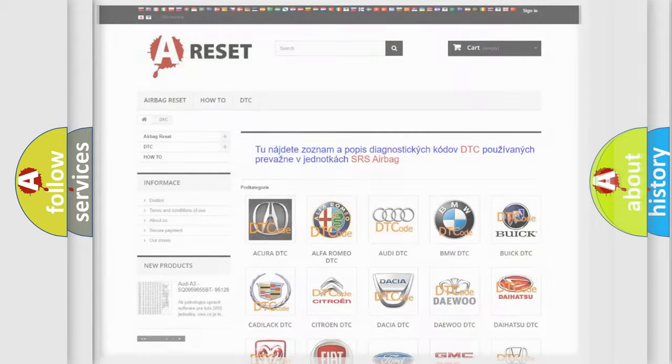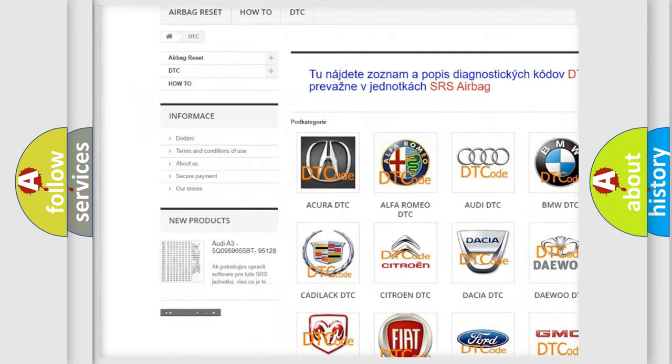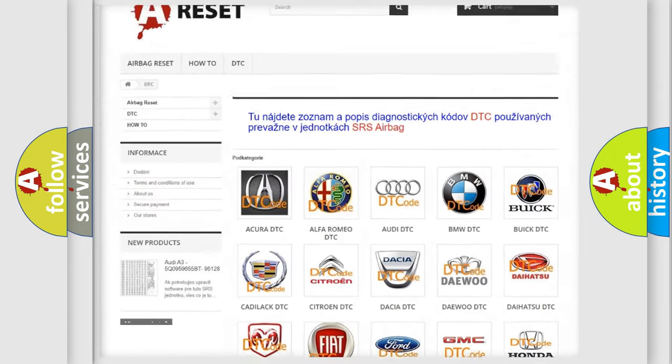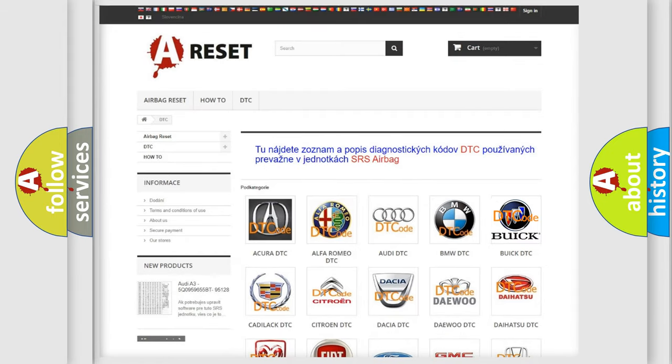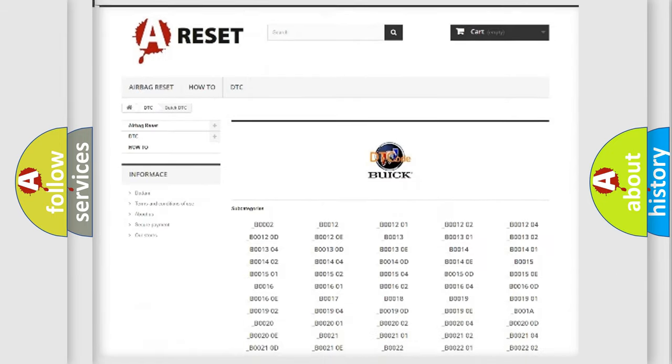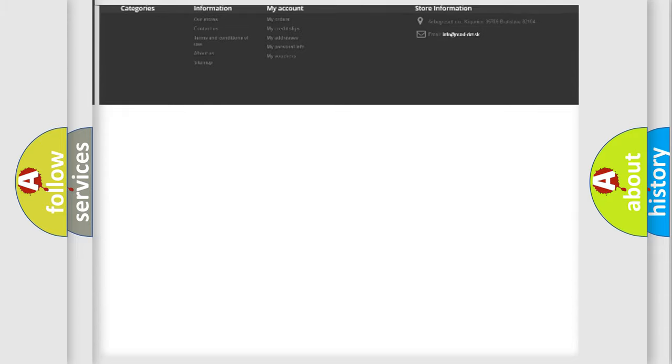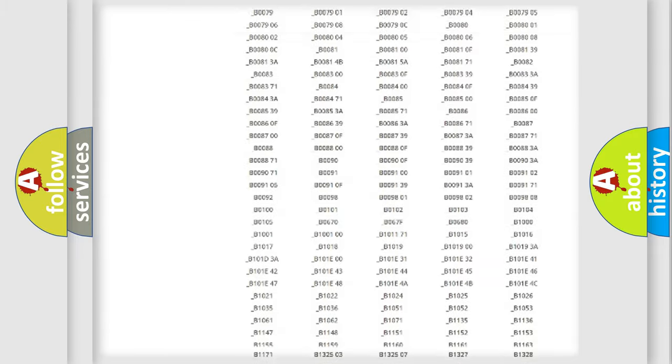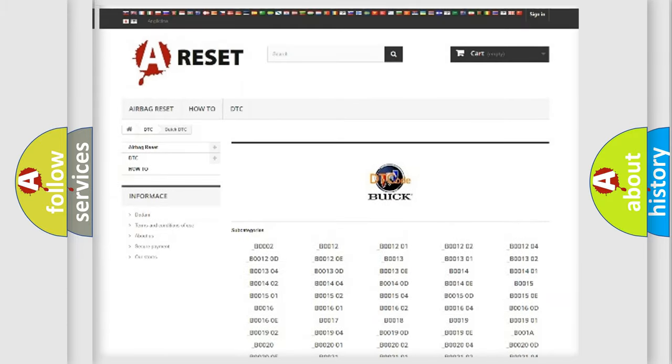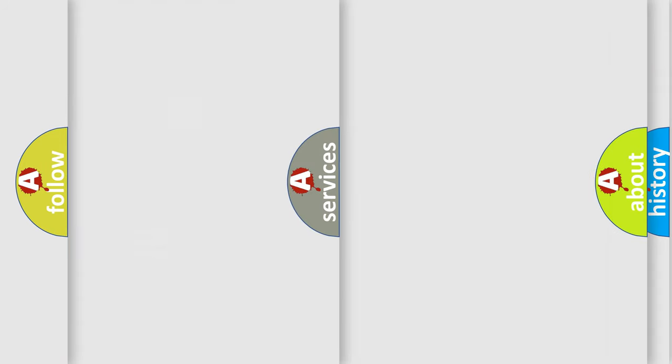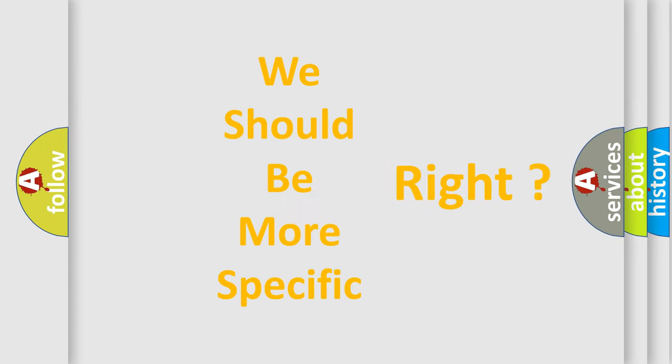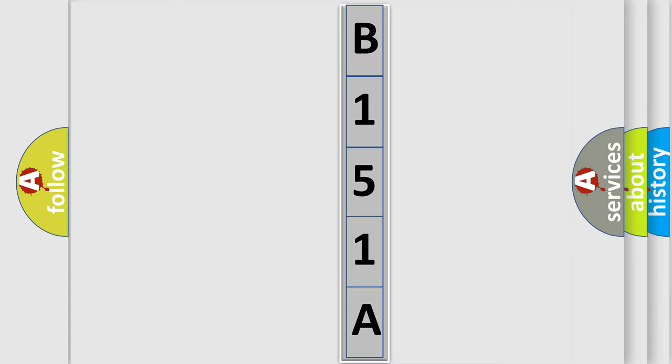Our website airbagreset.sk produces useful videos for you. You do not have to go through the OBD2 protocol anymore to know how to troubleshoot any car breakdown. You will find all the diagnostic codes that can be diagnosed in Buick vehicles, also many other useful things. The following demonstration will help you look into the world of software for car control units.